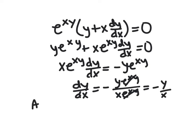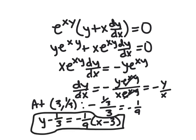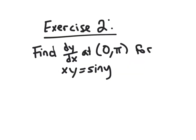And so at the point 1 third, this is negative 1 ninth. So that's our slope. And then we can just use point slope form. So we get y minus 1 third is negative 1 ninth times x minus 3.